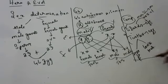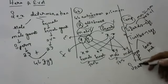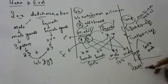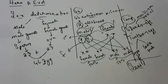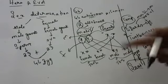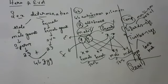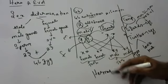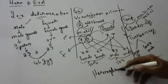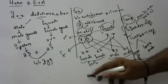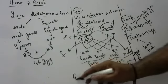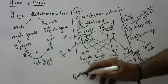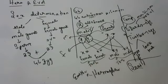A snail is an organism that can change its sex according to its surroundings. When both male and female sex organs are present in the same animal, it is called a hermaphrodite. Famous examples of hermaphrodites are earthworms and leeches.